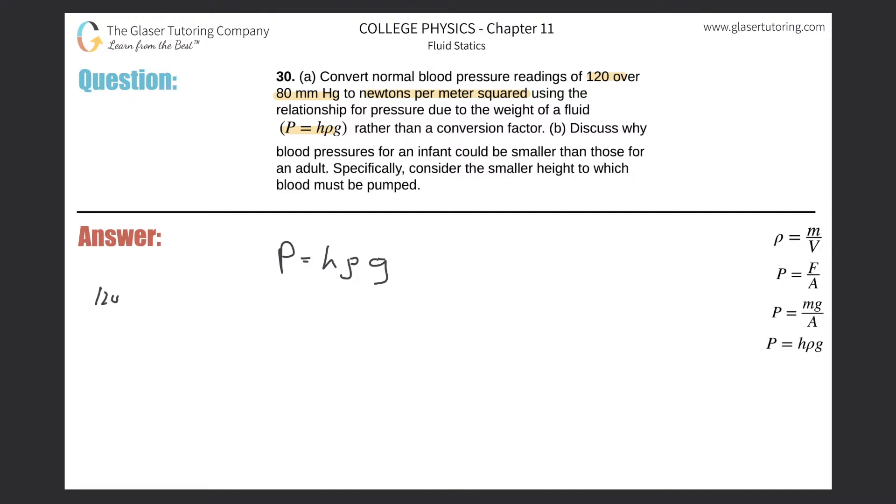The blood pressure is 120 millimeters of mercury over... It's not really a division. This is systolic pressure, when the heart is contracting. Diastolic then is on the bottom when the heart is relaxing during the time between the beats. So there's going to be 80 millimeters of mercury. We got to look at each one separately.